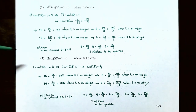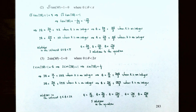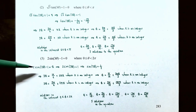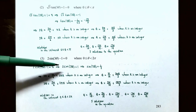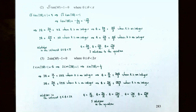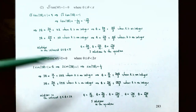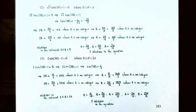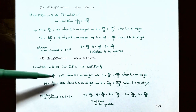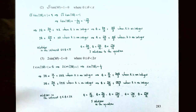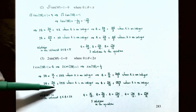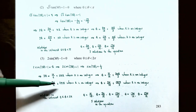Number three: the equation is two times sine of three theta minus one equals zero, where theta is between zero and two pi. Adding one and dividing by two gives sine of three theta equals one half. Since sine is positive in quadrants one and two, the angle three theta equals pi over six plus two pi k, or three theta equals five pi over six plus two pi k, where k is an integer, using two pi as the period of the sine function.